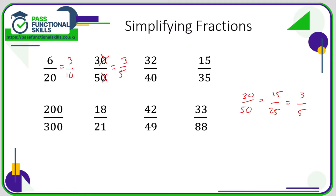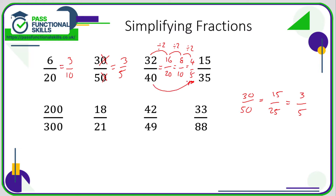Thirty two out of forty — both are even, so divide by two to get sixteen twenty, then divide by two again to get eight and ten, then by two again to get four five. So thirty two fortieths simplifies to four fifths. It took three steps, but every step was simple — just dividing by two. Don't worry about finding the biggest number you can divide both by.